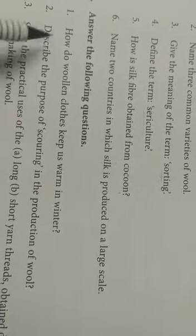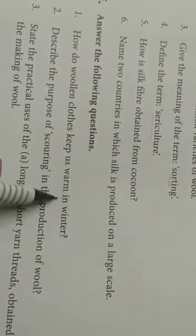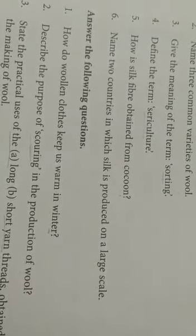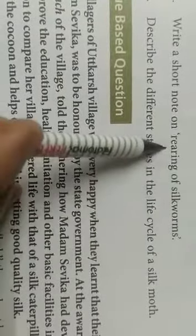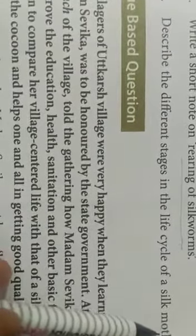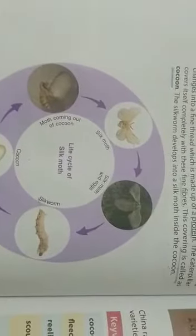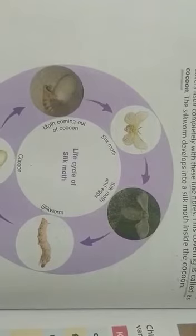Portion E is also very simple. Questions include: how do woolen clothes keep us warm in winter? Describe the process of scoring in the production of wool. Explain the use of long yarn and short yarn. Write a short note on the rearing of silk moth, and describe the different stages in the life cycle of silk moth. Portions D and E answers will be uploaded on your site. Thank you and have a nice day.